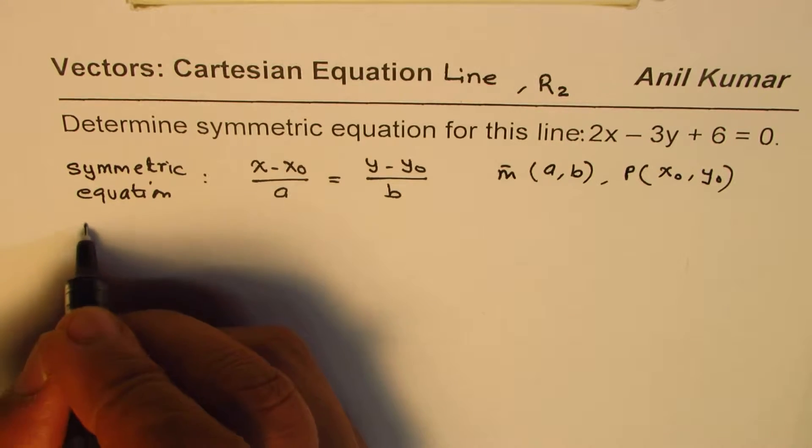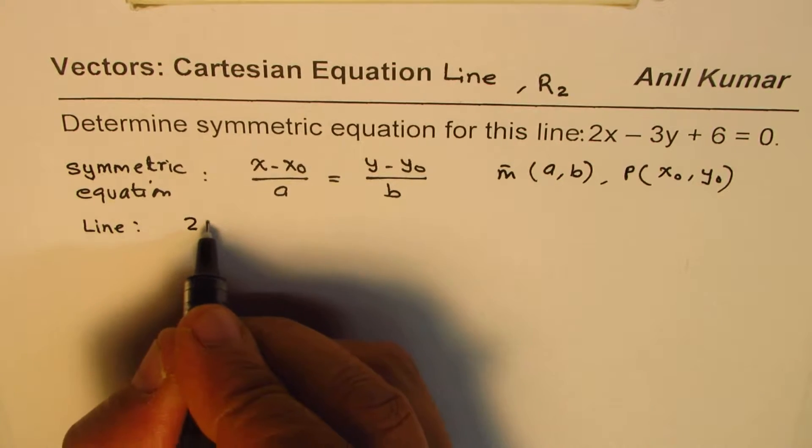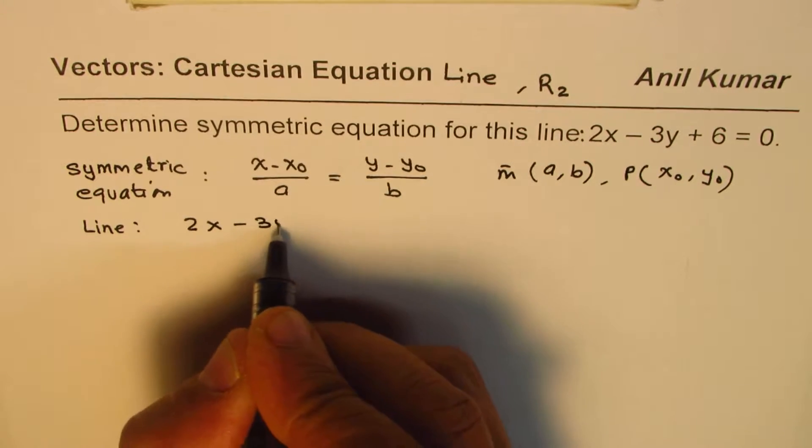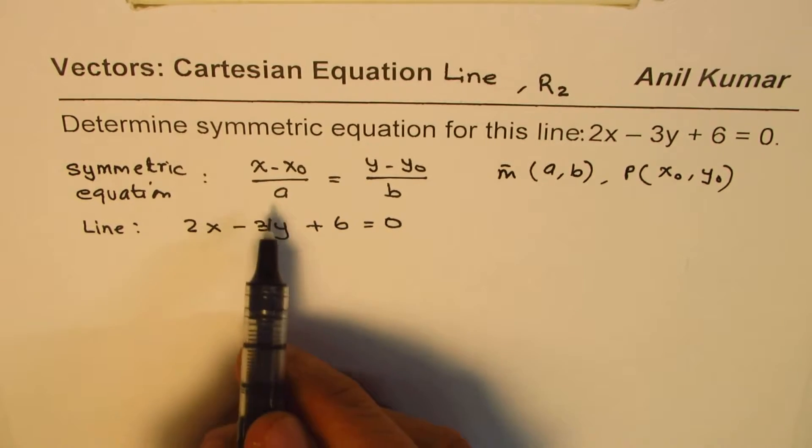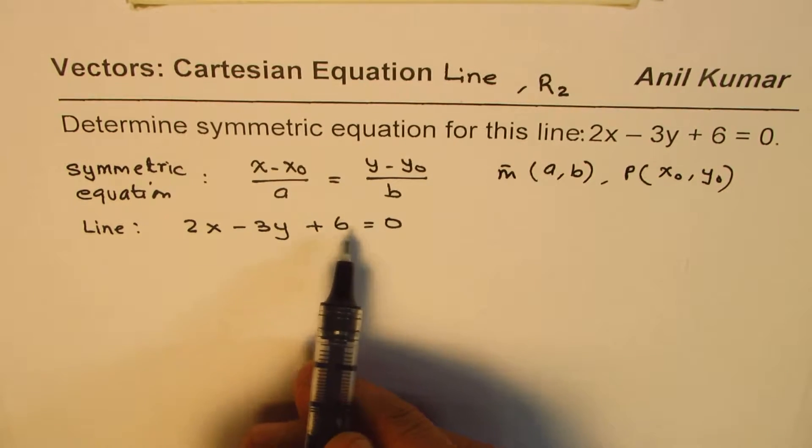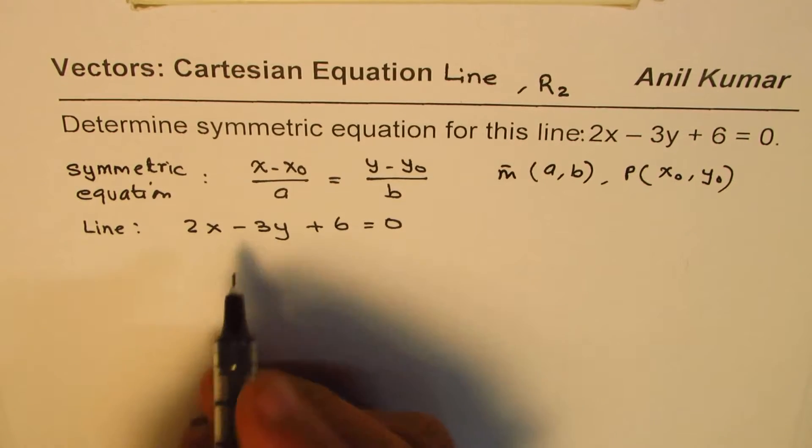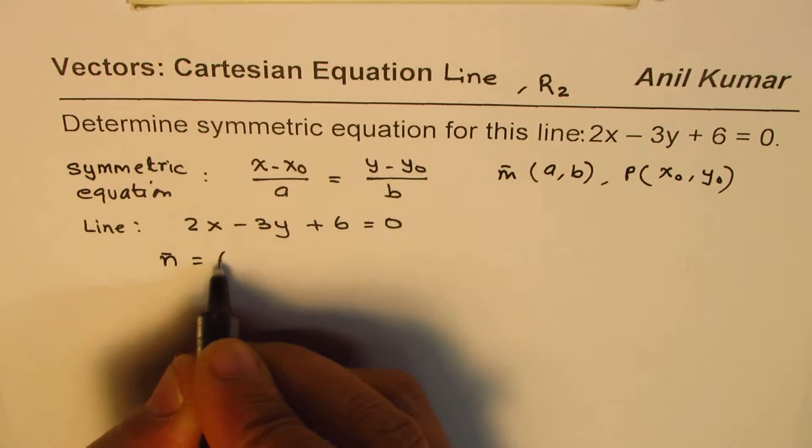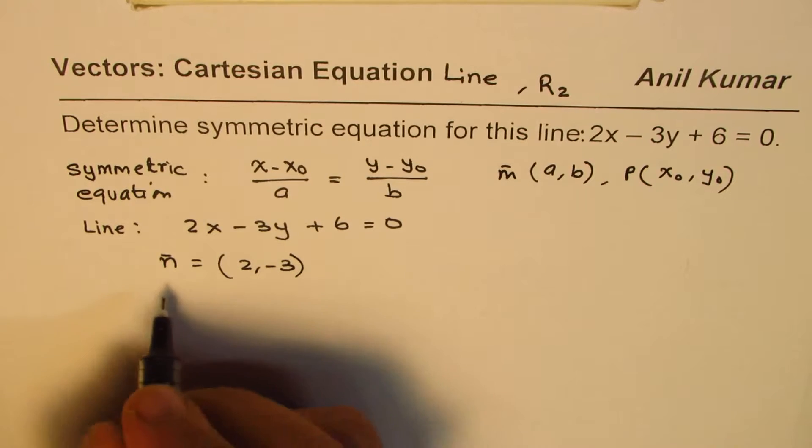So, what we are given is a line whose equation is 2x minus 3y plus 6 equals to 0. Now, we should find a point from here, and also, we should find the direction. But what we know from here is the normal. So, we know the normal from here. Normal is 2 minus 3.